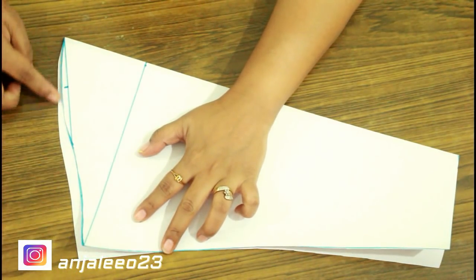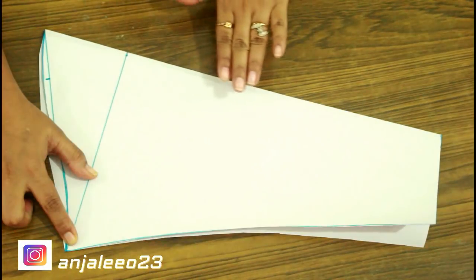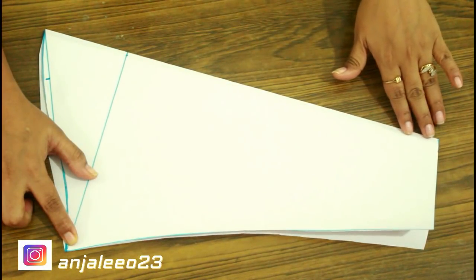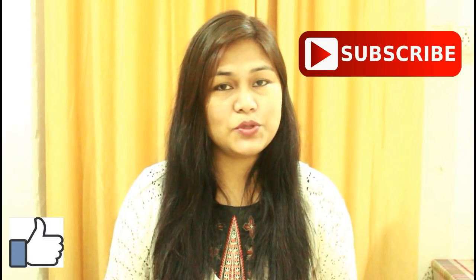Here you can see this is the front curve and this is the back one. Like this my drafting of sleeves is done. You can use this drafting for any of your dress, just keep this and you can cut your sleeves very easily.